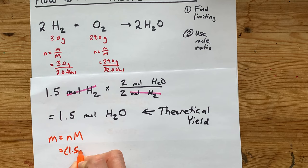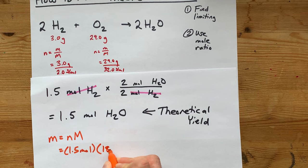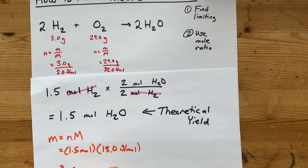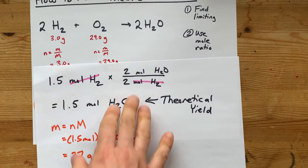Mass is moles times molar mass. For us here, it's 1.5 moles times the molar mass of water is—I just know it's 18-ish grams per mole. So that gives me 27 grams total.